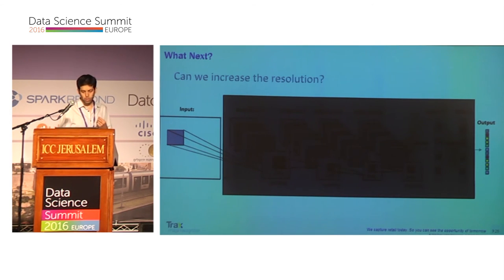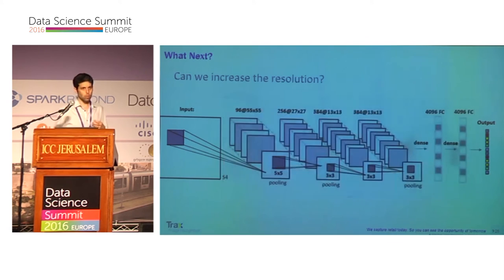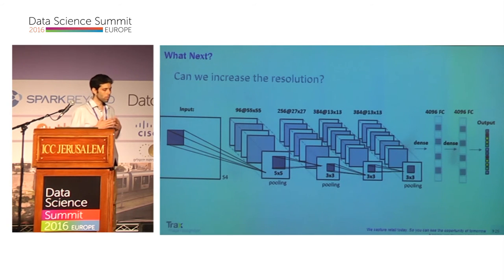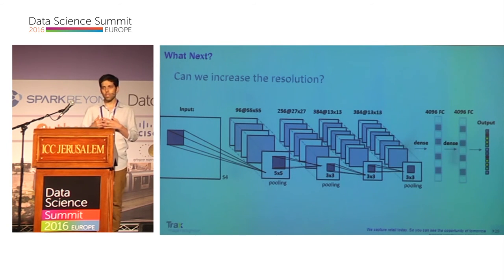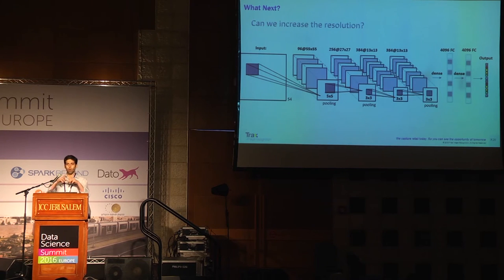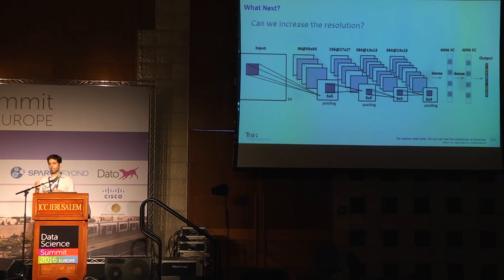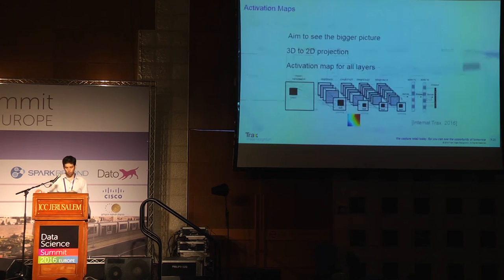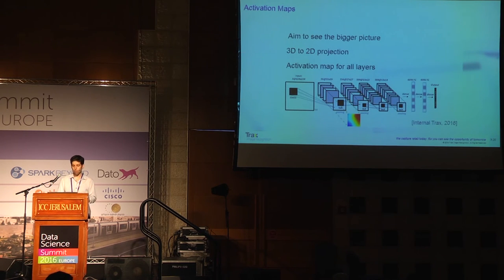We still use deep learning as a black box here because we only manipulate the input and check what happens to the output. But can we increase the resolution? Can we really open this black box? We want the ability to say not what the whole model learned, but what each individual layer learned.